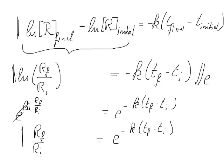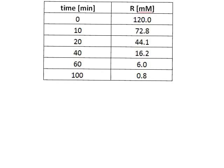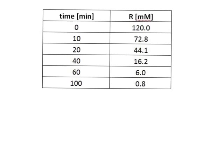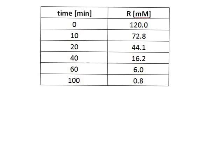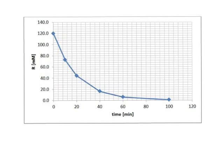So how would we go about looking at a first-order reaction? Let's have a look at its characteristics. Here is a typical time course for a first-order reaction: we plot time on the x-axis and the concentration of the reactant on the y-axis. When we plot time versus concentration we get a characteristic curve — this is a very characteristic feature of a first-order reaction.